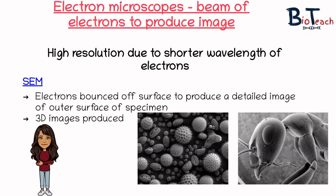A microscope of this power easily obtains clear images of very small organisms such as bacteria and small particles such as viruses. The image produced is of the outside surface only, and you can see a couple of those SEM examples on the screen now.